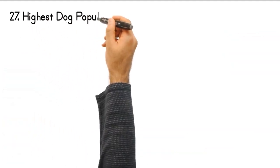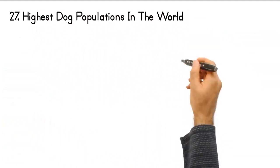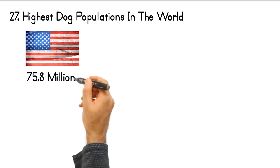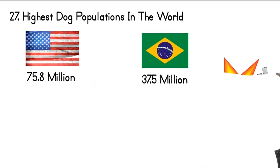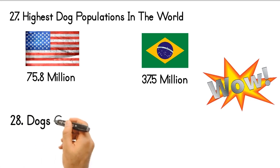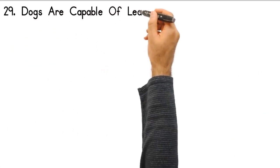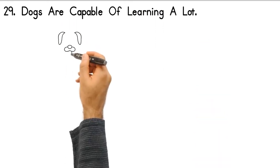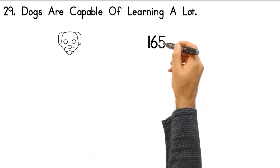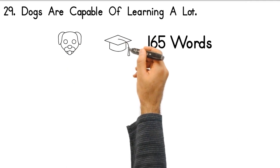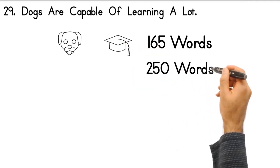27. Highest dog populations in the world are the United States at 75.8 million and Brazil at 37.5 million. 28. Dogs can see more than black and white. 29. Dogs are capable of learning a lot. The average dog is capable of learning up to 165 words and gestures, while some of the best are capable of 250 or more.